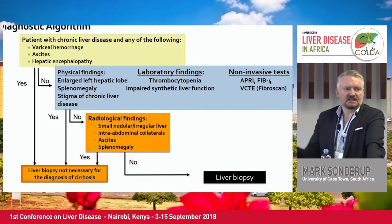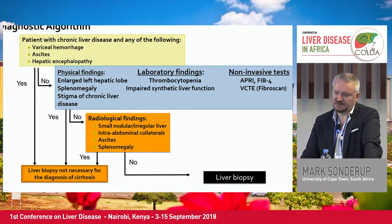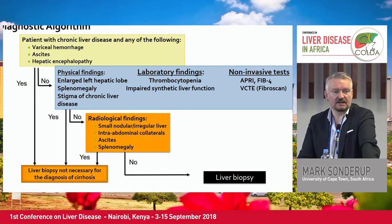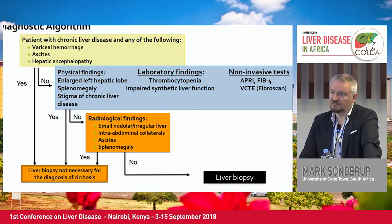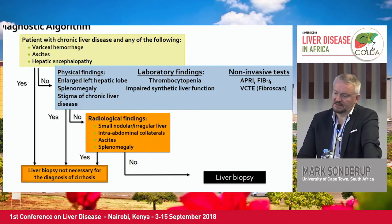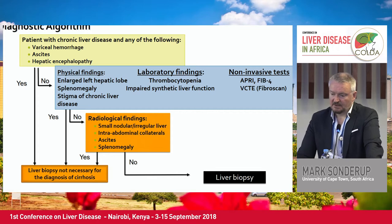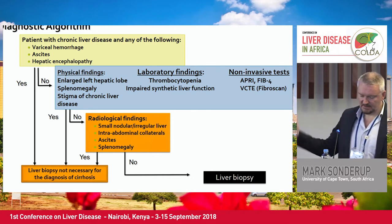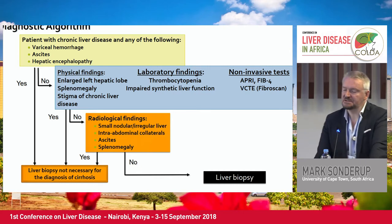Looking at a diagnostic algorithm: any patient presenting with a variceal bleed, ascites, or encephalopathy is very likely to be cirrhotic or at least have significant portal hypertension — you don't need liver biopsy there. But in most instances in our settings, we make the diagnosis inferentially, through physical findings such as an enlarged left hepatic lobe, splenomegaly, ascites, stigmata of chronic liver disease, lab findings of thrombocytopenia, non-invasive screening like FibroScan, or serum-based tests. Radiologically, ultrasound showing a small nodular liver, enlarged portal vein, ascites, and splenomegaly all come together to make a bedside assessment of cirrhosis in the absence of biopsy.